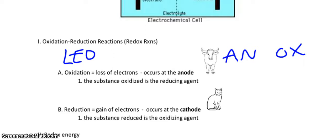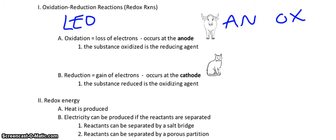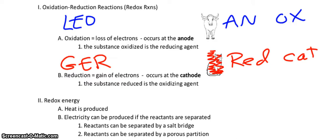The next one is reduction. Reduction gains electrons. Grrr. Reduction is gain of electrons, and that occurs at the cathode. Now, watch this. That would be my red cat. Get it? Reduction occurs at the cathode. So those are my terminologies.